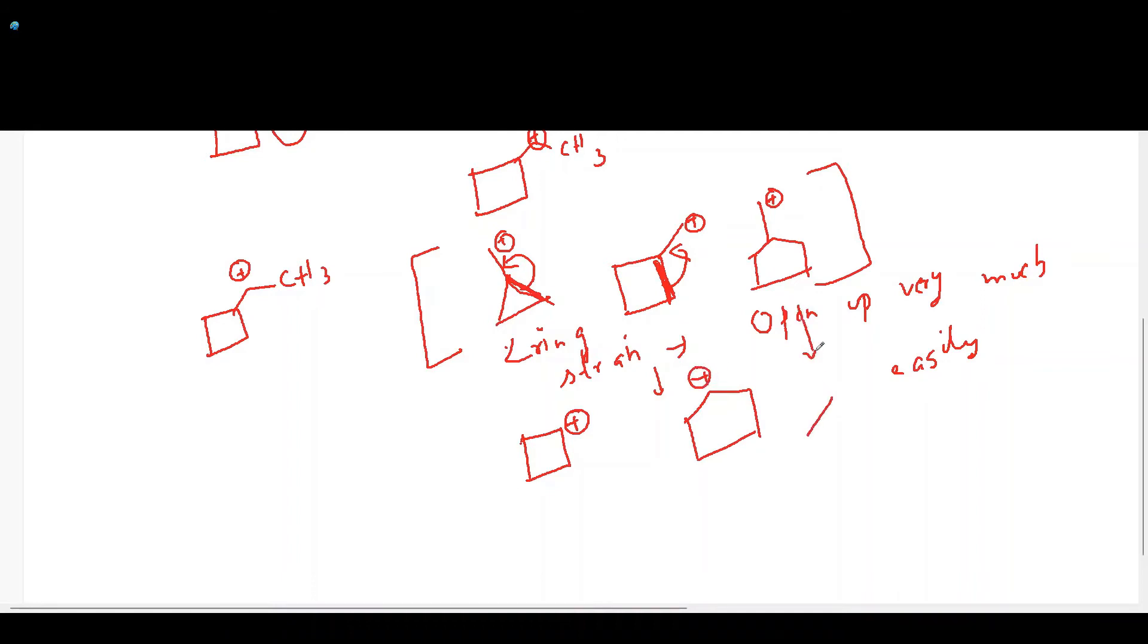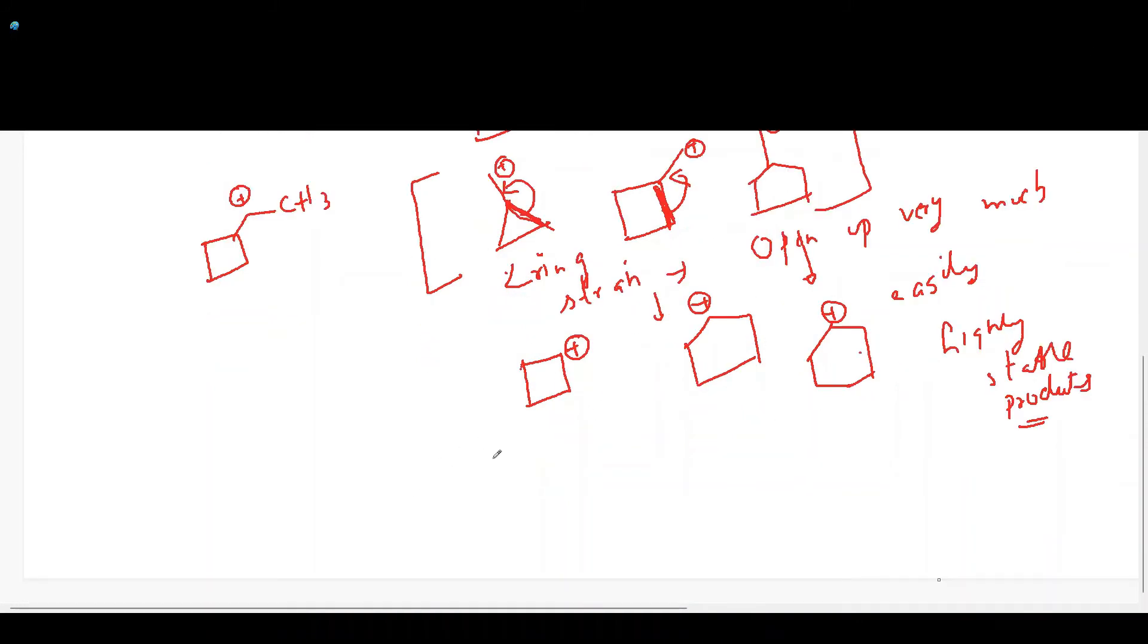Cyclopentanyl will also form a cyclohexyl carbocation because these substrates relieve their angle strain to form highly stable products. When you have this substrate with CH3, this C exactly resembles that of the cyclobutyl radical.